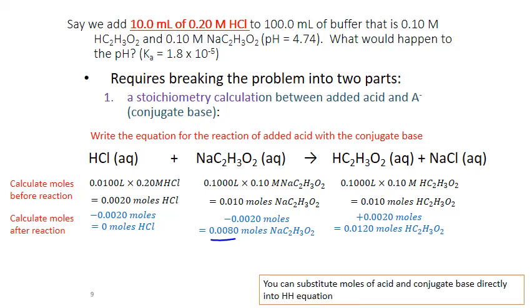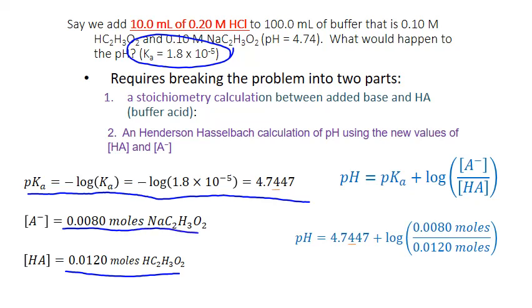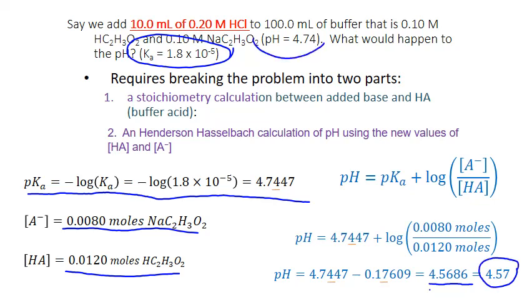We substitute the final moles after reaction directly into the Henderson-Hasselbalch equation to calculate the new pH. Our pKa is still the negative log of 1.8 times 10 to the negative 5 for acetic acid. The conjugate base has decreased and the acid has increased. Substituting into Henderson-Hasselbalch, we end up with a pH of 4.5686, which rounds to 4.57. So it's a little more acidic after the addition of the acid, but not much.